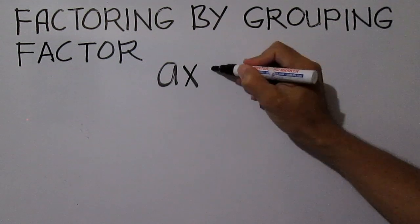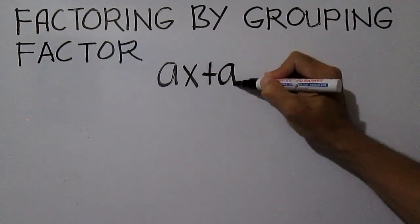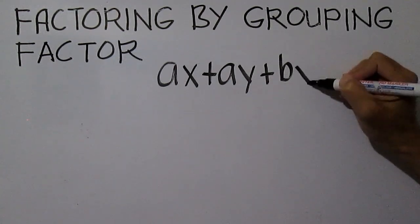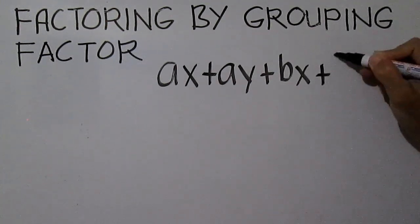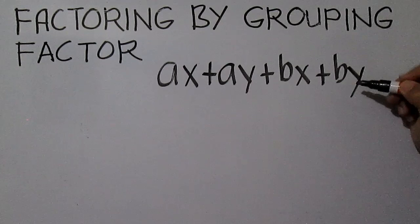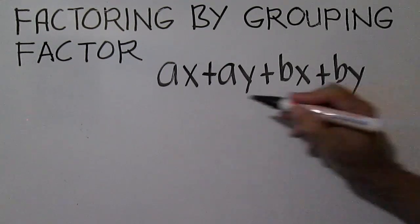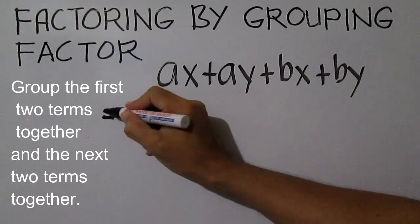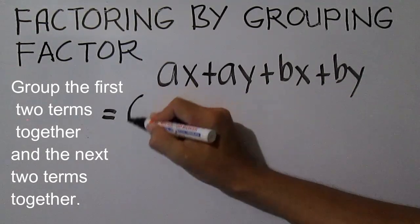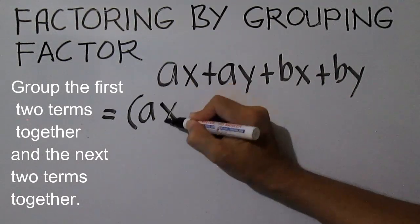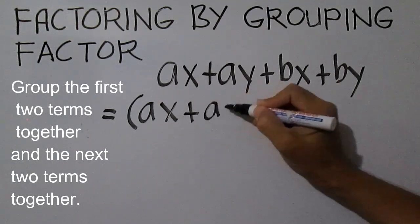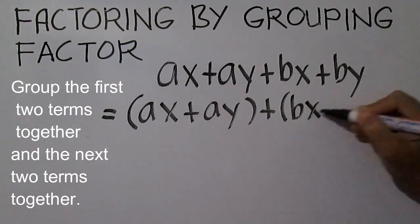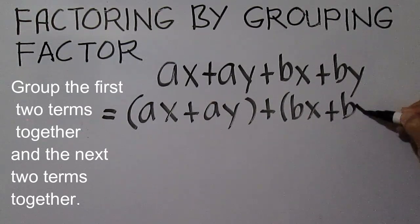Factor AX plus AY plus BX plus BY. First, group the first two terms together and the next two terms together: the quantity AX plus AY, plus the quantity BX plus BY.